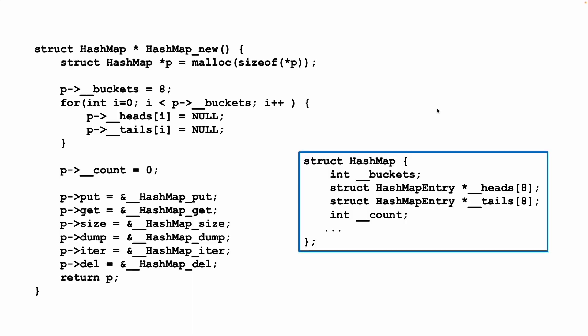This is the new constructor, and I can call your attention to the changes. Remember, we have a number of buckets — we have eight heads and eight tails. So we're going to look in the constructor. We're going to allocate a HashMap. It's still got the functions for our encapsulation: put, getSize, dump, and iter. The buckets is set to eight, and we're going to initialize all eight buckets to have a head of null and a tail of null. Because this is just eight linked lists, and the count you set to zero.